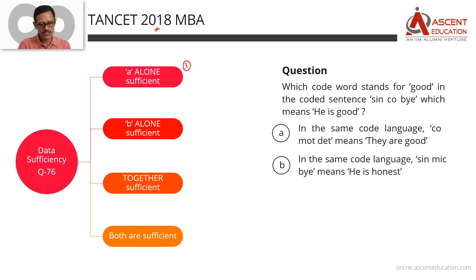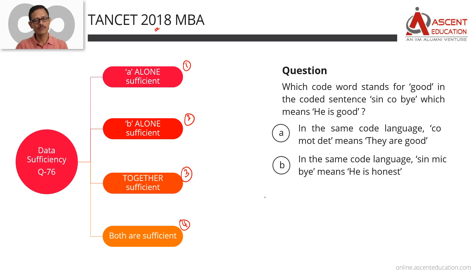Statement A alone is sufficient — that's option 1. B alone is sufficient — that's option 2. Together they are sufficient — that's option 3. Independently sufficient — that's option 4.